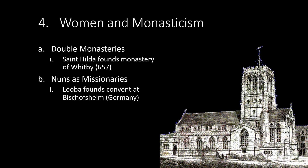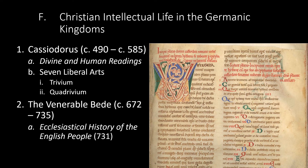Lioba would found a convent in Bischoffsheim in Germany. Christian intellectual life in the Germanic kingdoms: Cassiodorus wrote the Divine and Human Readings, a combination of Christian and pagan literature. There were seven liberal arts: the trivium — grammar, rhetoric, and logic — and the quadrivium — arithmetic, geometry, astronomy, and music. The Venerable Bede wrote an ecclesiastical history of the English people beginning with Christianity coming to England, the major source of historical writing of early Anglo-Saxon England.